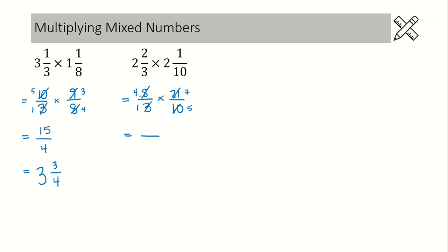No more common factors. Multiply across. 4 times 7 is 28, and 1 times 5 is 5. Again, we end up with this improper fraction. So we need to put it into a proper mixed number, which would be 5 and 3 fifths.